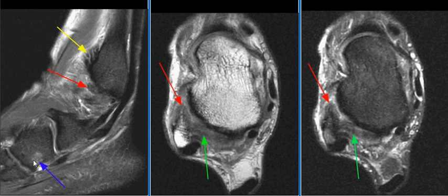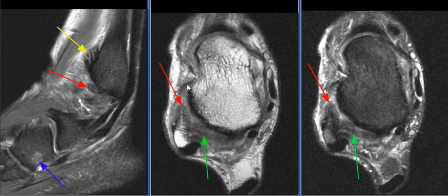There is possible stress-related edema in the distal lateral aspect of the cuboid bone, as seen on this sagittal image with this blue arrow. MR findings are consistent with a complete tear of the anterior talofibular ligament and high-grade sprain of the posterior talofibular ligament.